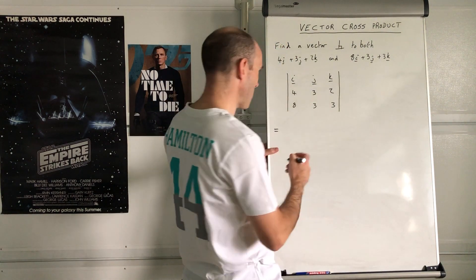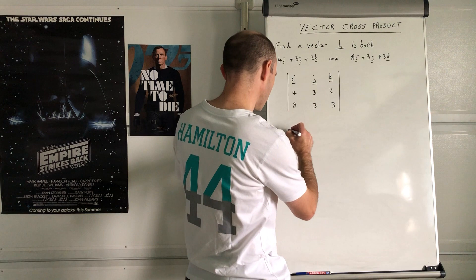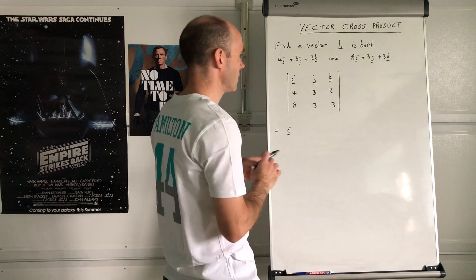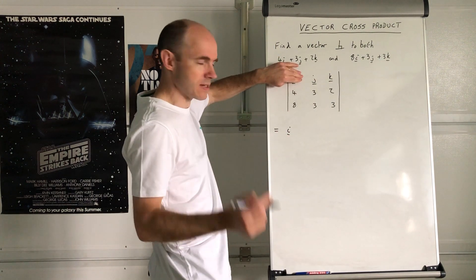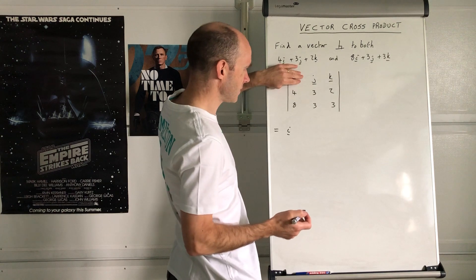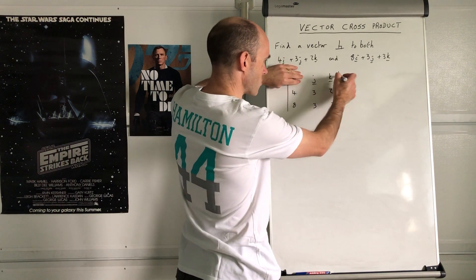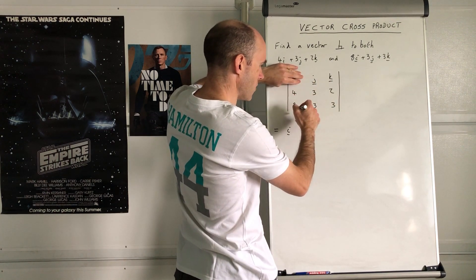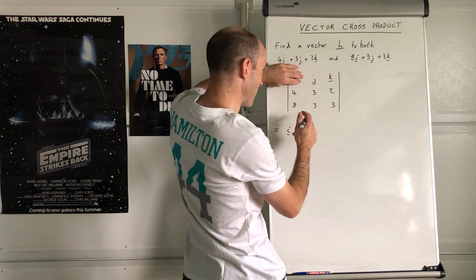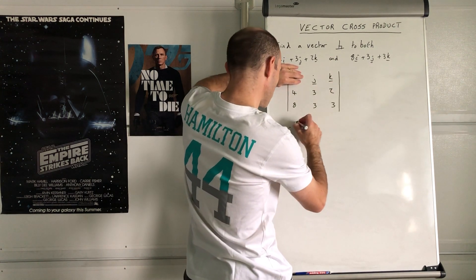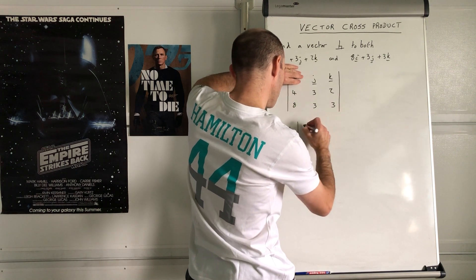To do the i component, I'll cover up the i and imagine I'm crossing out that column and that row. The numbers I'm left with are 3, 2, 3, 3.